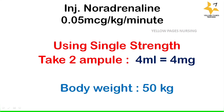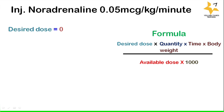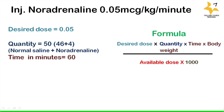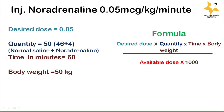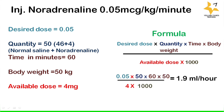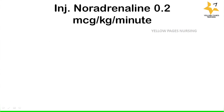Applying the formula: desired dose 0.05, quantity 50 (46 ml normal saline plus 4 ml noradrenaline), time 60 minutes, body weight 50 kg, available dose 4 milligram. The calculated answer is 1.9 ml per hour.